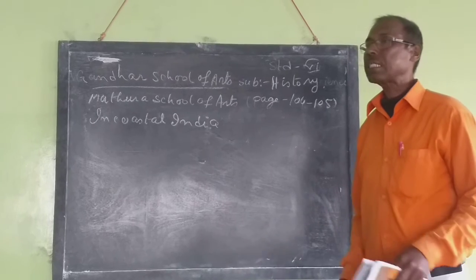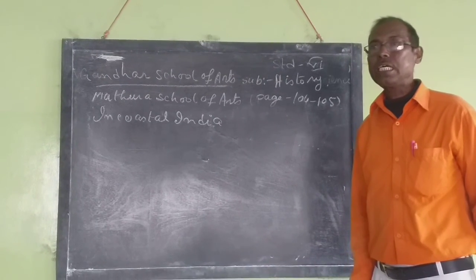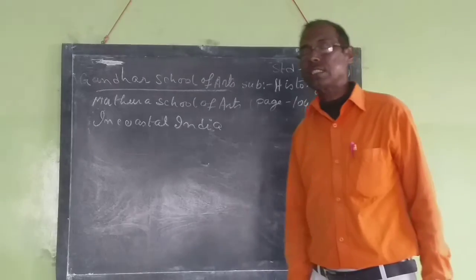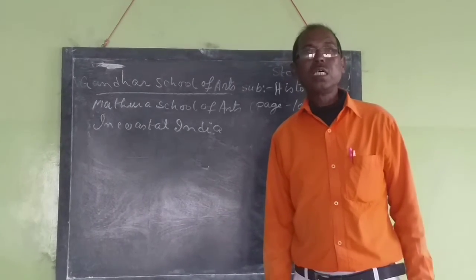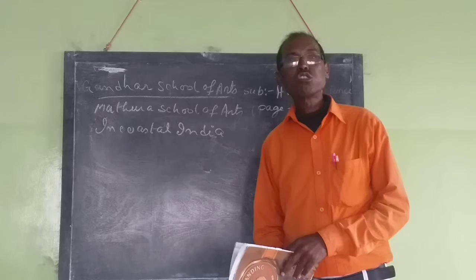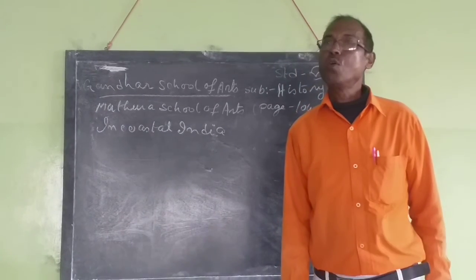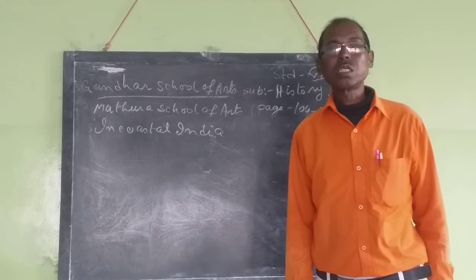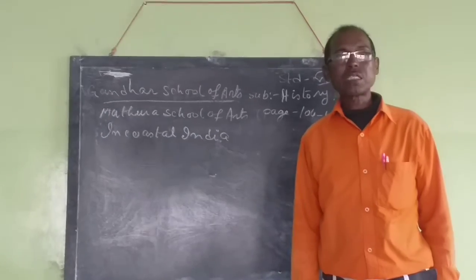After the three royal dynasties, another royal dynasty was formed, called the Satavahana. Gautamiputra Satakarni was one of the most famous rulers of the Satavahana.